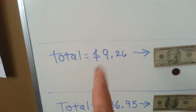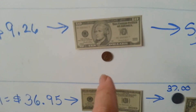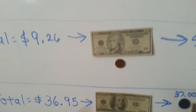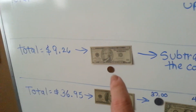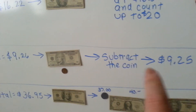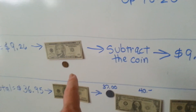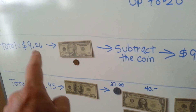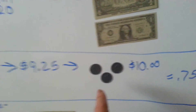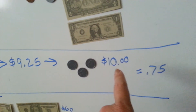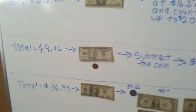What if the total is $9.26 and the person gives you $10 and a penny? What do they want from you? Why are they giving you that penny? Well, if they give you that penny, then they're not going to get pennies in their change. Because you would subtract that coin from the total — $9.26 becomes $9.25. Now you can just give them three quarters and you'll be at $10. Their change is $0.75. That's why they give you that extra coin.